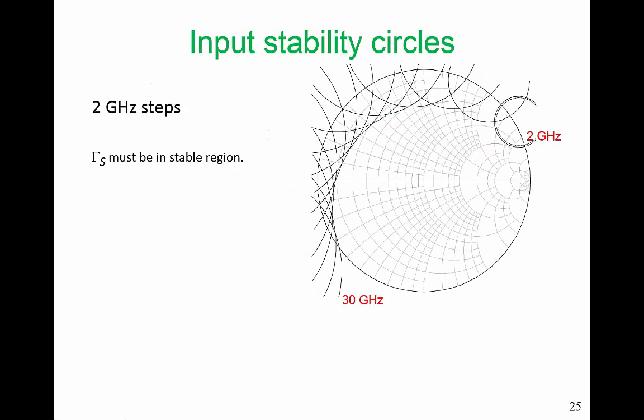In this part, we're going to initially focus on stability circles and talk about how we can start making a trade-off between optimum input matching for maximum power transfer, design of the input matching network for good noise performance, and also designing the input matching network for stability.